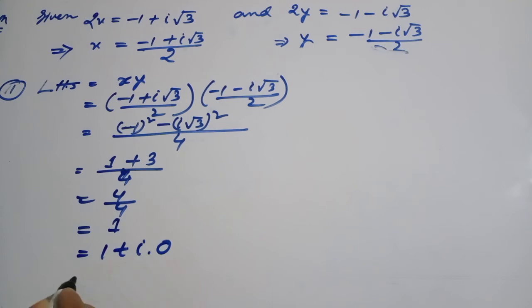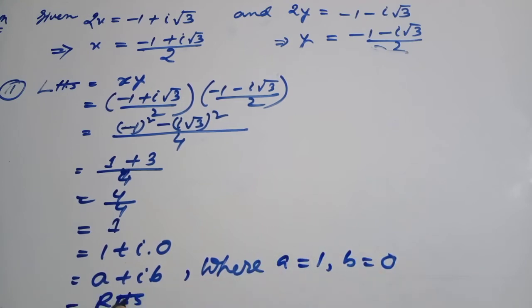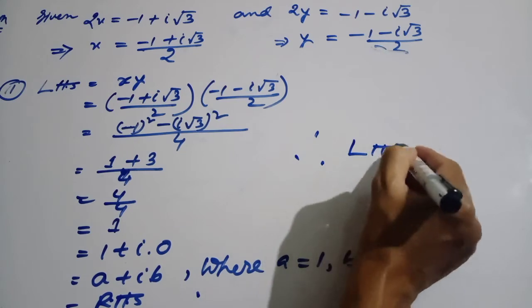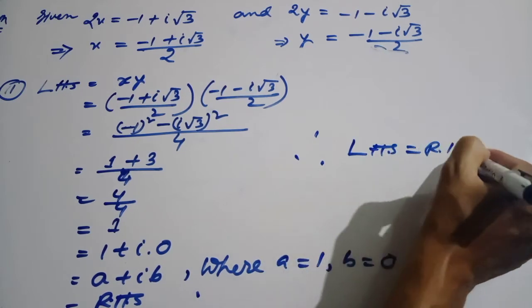1 plus 1 plus i. 1 plus i. A plus ib, a plus ib. A question to the other a plus ib where a is equal to 1, b is equal to 0. A is equal to 1, b is equal to 0. This is equal to right and right hand side. Left hand side equal to right inside.